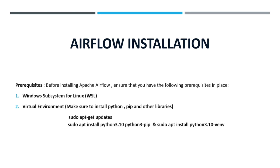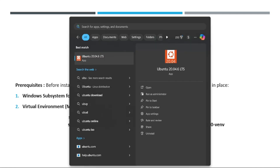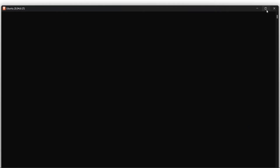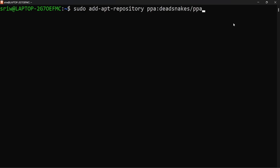In this video we will be installing Apache Airflow on Windows Subsystem for Linux, that is WSL. First, launch your Ubuntu Linux distribution from the Start menu — press the Windows key, search for Ubuntu, and press enter. A terminal will open for Ubuntu 20.04.